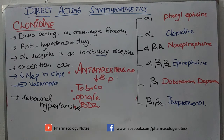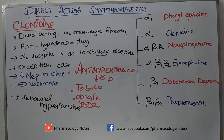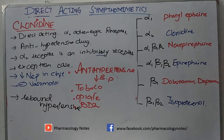If clonidine decreases sympathetic outflow and inhibits the sympathetic vasomotor center, thus decreasing sympathetic activity, it will have side effects including lethargy, fatigue, sedation, constipation, and xerostomia. These are the side effects resulting from the decrease in sympathetic outflow and decreased neurotransmitter release.